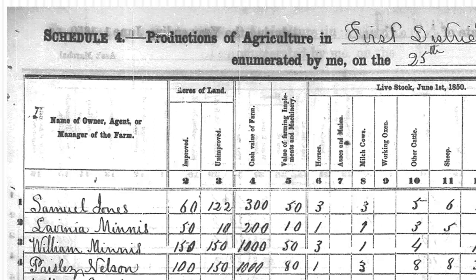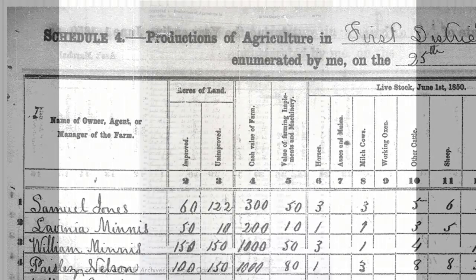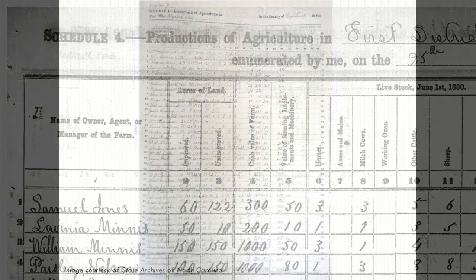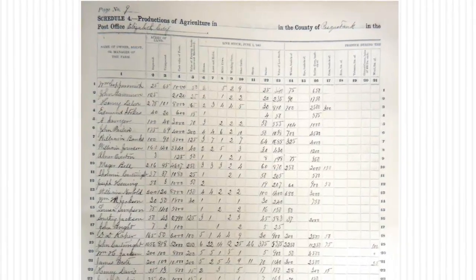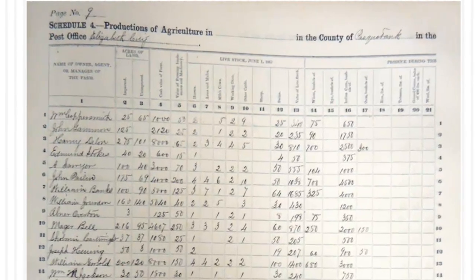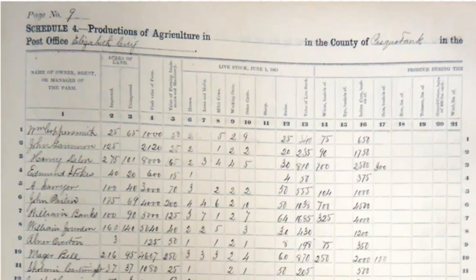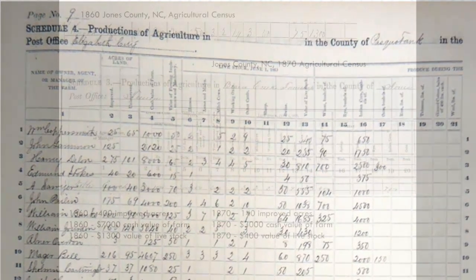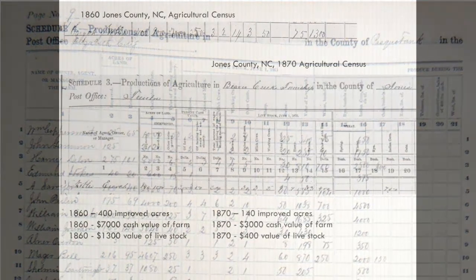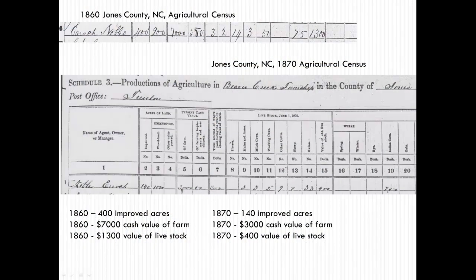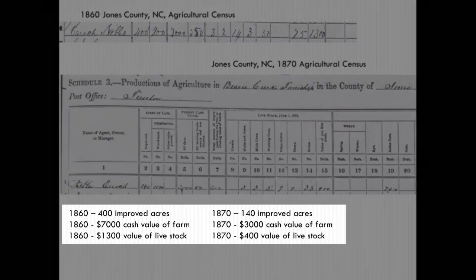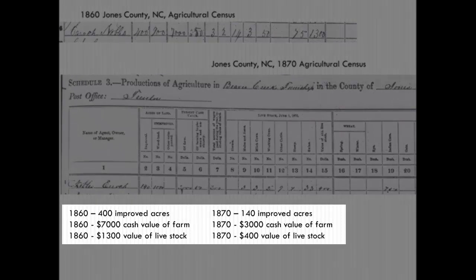When using the agricultural census, consider a few points. The schedule identifies the land and shows the economic value and production for each farm. Also, by comparing the 1860 and 1870 schedules for an ancestor, you can often get a sense of the impact of the Civil War on his life and livelihood.